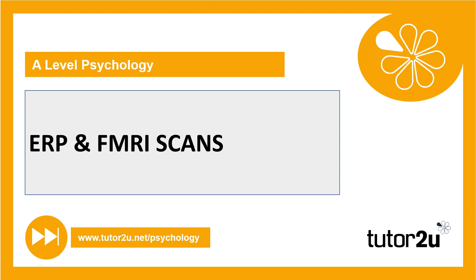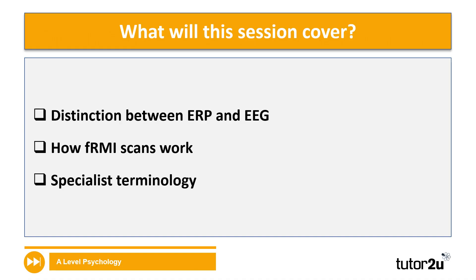Hi everybody. In lesson two of week nine, looking at ways of studying the brain, we focus on ERPs and fMRI scans. In this session we'll make a distinction between those two methods of studying the brain, take a close look at how fMRI scans actually work, and contribute to even more specialist terminology that you'll need when talking about this topic.